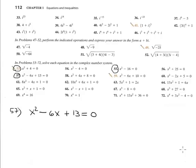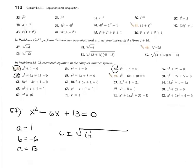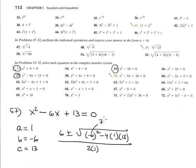Again, a quadratic equation with complex numbers — problem 16. In this case I solve it by the quadratic formula. a = 1, b = -6, and c = 13. So minus b is 6, plus or minus square root of: (-6)² minus 4 times 1 times 13, all divided by 2 times 1. Negative 6 squared is 36, and 4 times 13 is 52.